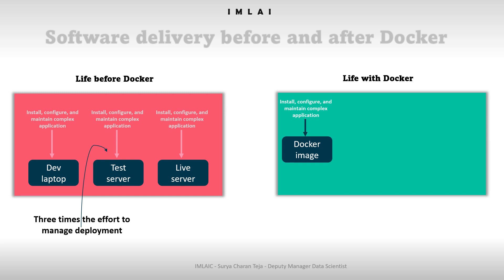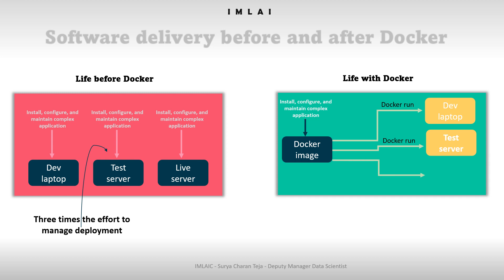With Docker, we write all these actions as instructions in a Dockerfile, build it, and get a Docker image. Once you have the Docker image, it's straightforward: if you want to test in a dev environment, just pull the image and run the container — that's it. Test server? Pull the image and run the container. Production server? Pull the image and run the container with a simple docker run command specifying the image name. A single effort manages deployment across all environments.